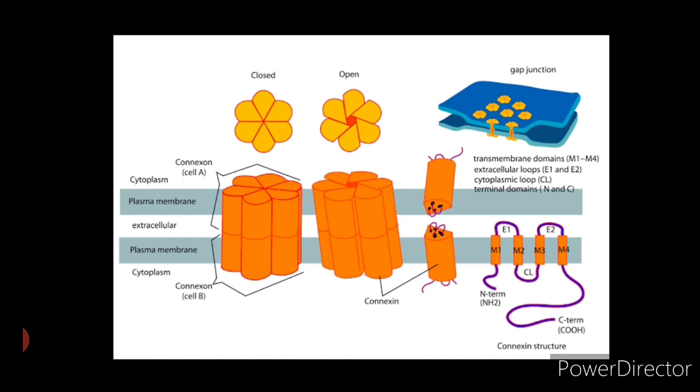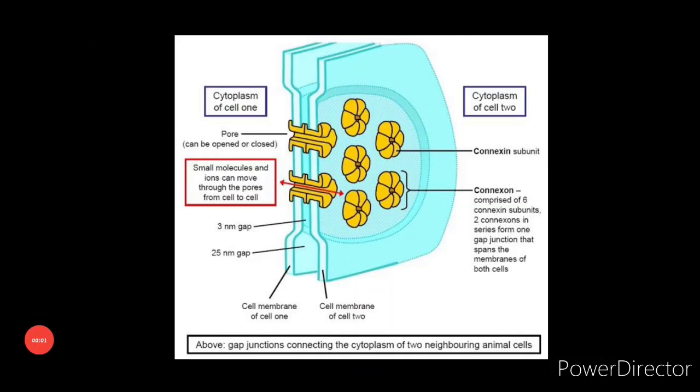In animals, these direct communication channels between cells are called gap junctions. In plants, they are called plasmodesmata. Now let us understand the structure of gap junction.